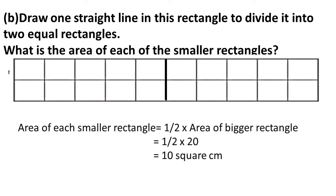Area of each smaller rectangle is equal to half into area of bigger rectangle — 20 square centimeter. So, half into 20 is equal to 10 square centimeter. Area of smaller rectangle is 10 square centimeter. These are some things from this lesson, How Many Squares, included in module 2. The remaining part of this lesson will continue in the next module. Complete this module by writing in your notebook properly, and complete your homework properly so that you will get enough practice.